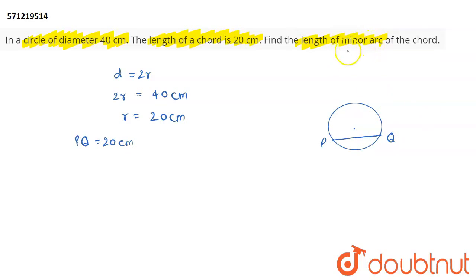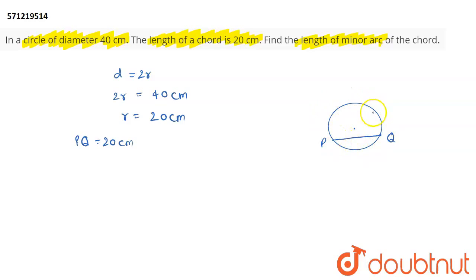We are required to find out the length of the minor arc of the chord. This chord has divided the entire circle into two arcs — one arc PQ and the other arc PQ. Depending on which direction you travel from P to Q: if moving anticlockwise from P to reach Q, that is the minor arc; if reaching Q from P in the clockwise direction, that is the major arc. The major arc is bigger than the minor arc.